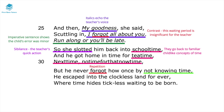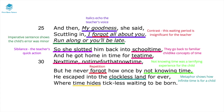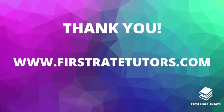By 'not knowing time' the child experienced something terrifying, because time just passes indefinitely without a strong understanding of this abstract concept. The metaphor 'he escaped into the clockless land' shows how infinite time feels for a child. The personification of time — 'time hides tickless' — shows the child felt really ambushed by time. This was a truly transformative experience they never forgot.